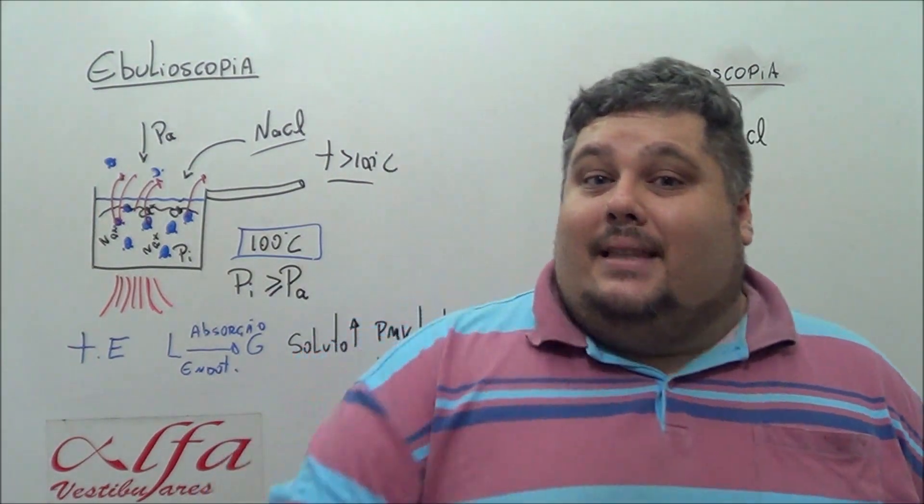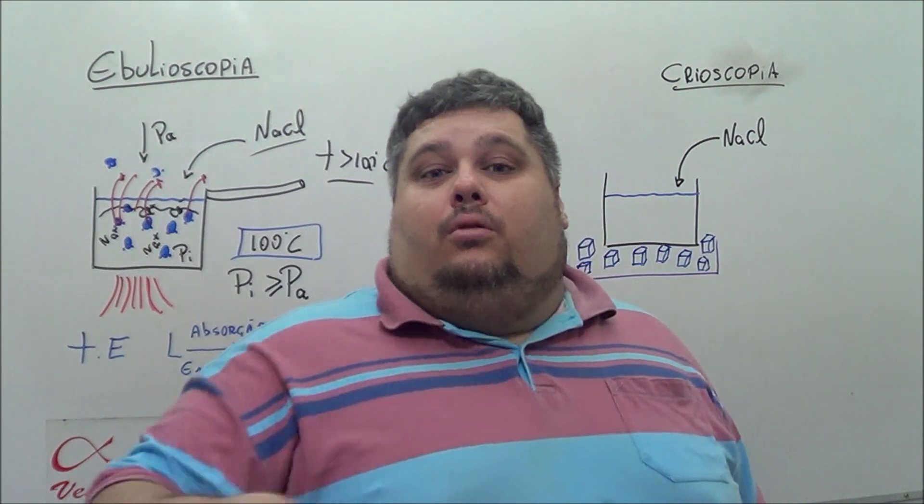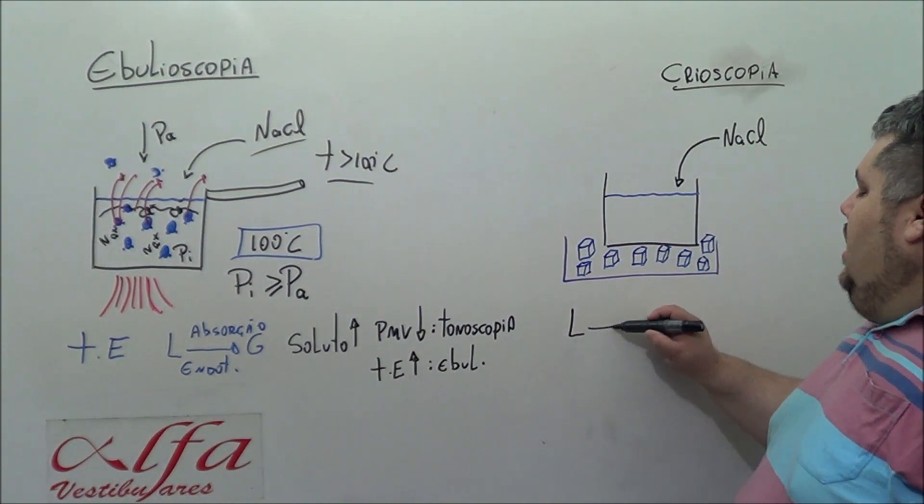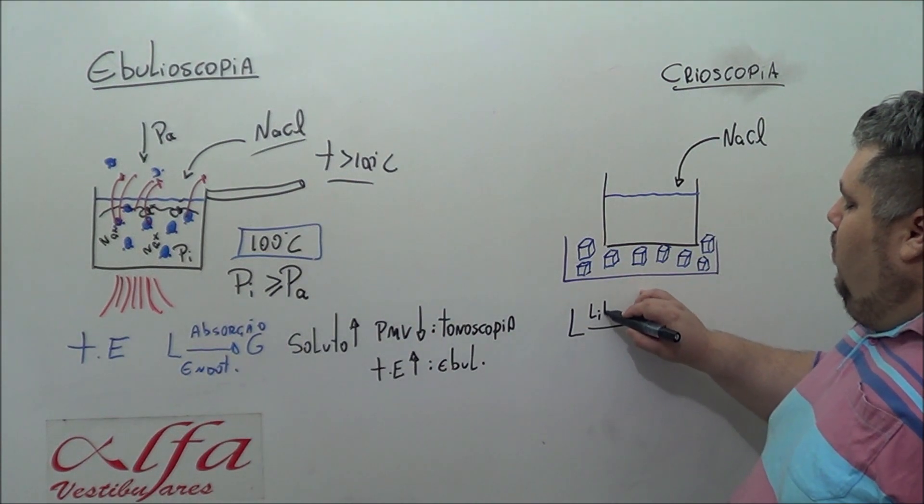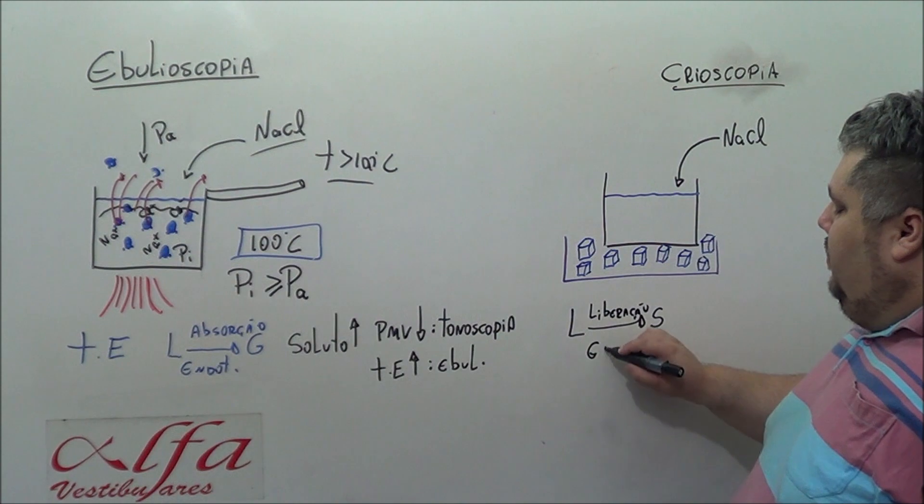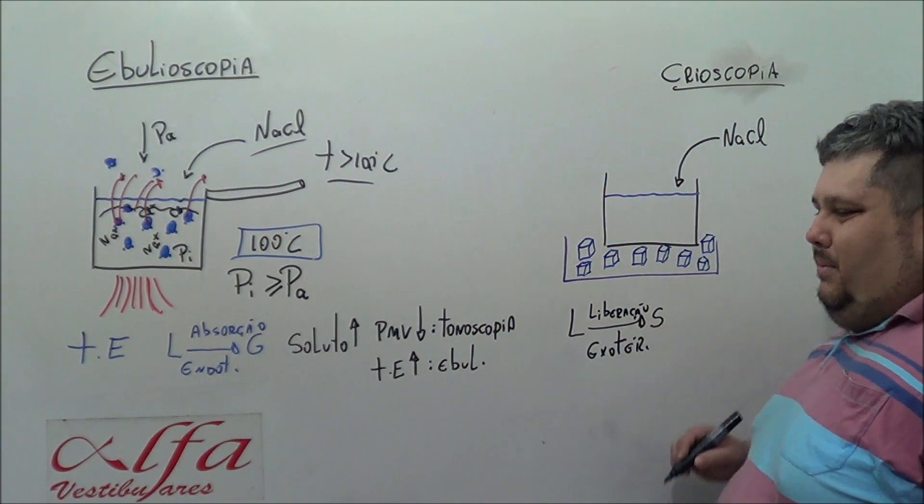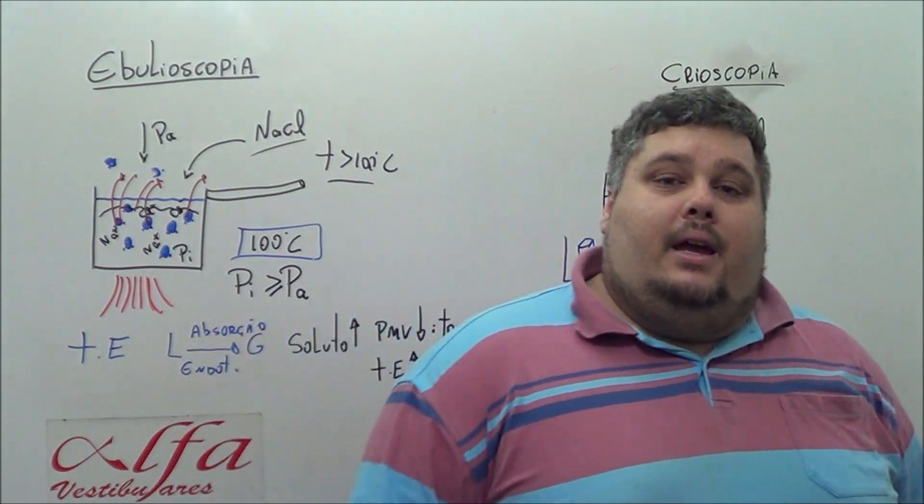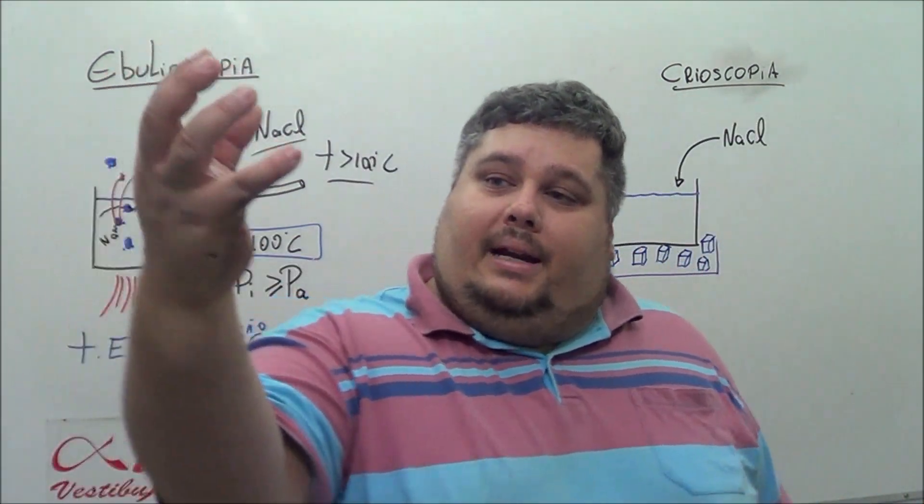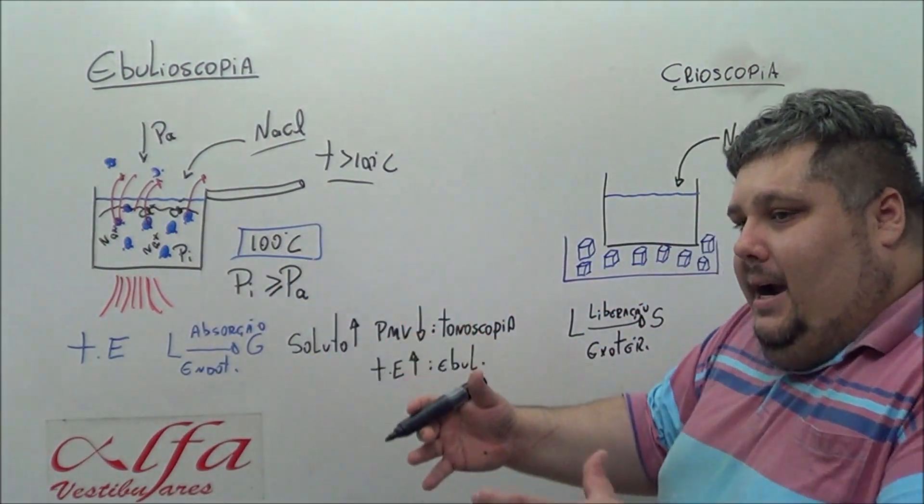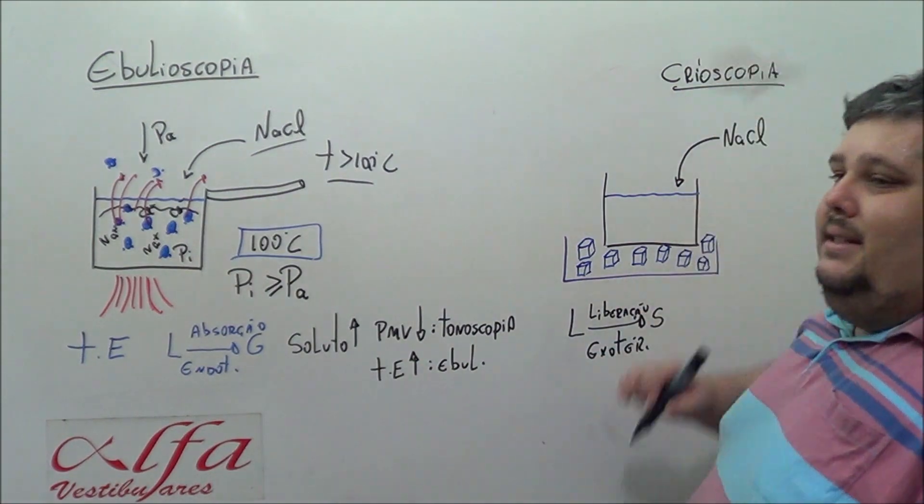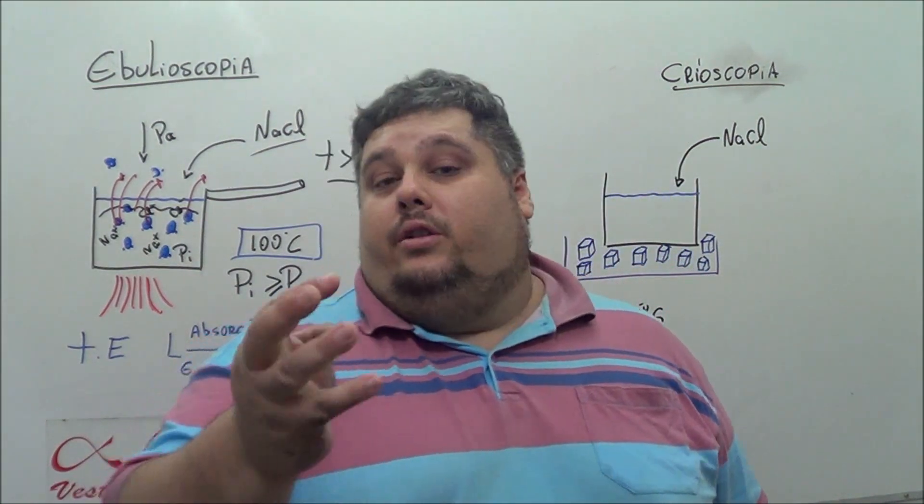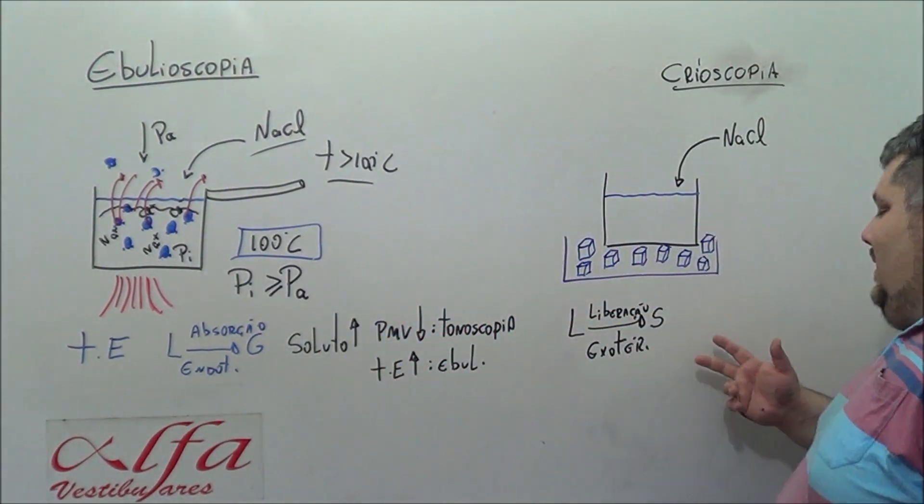Cryoscopy comes from crystal, from freezing, solidification point. We are talking about solidification. What is solidification? It's the passage of the liquid state to the solid state, occurring with a liberation of energy, an exothermic process. To make ice cubes of water, you have to put where? In the freezer. For what? For the freezer to remove heat from the water. The water loses this energy until it starts to form crystals. When it starts to form crystals, there began the solidification, the freezing. This is cryoscopy.